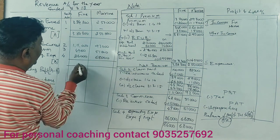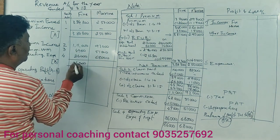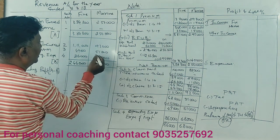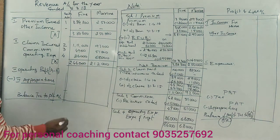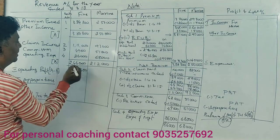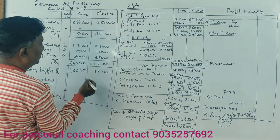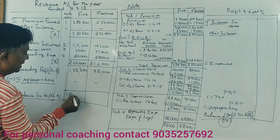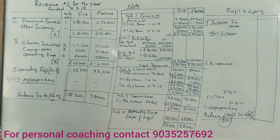Computing totals for the revenue account: after all deductions, the revenue surplus for fire is approximately ₹13,300 and marine carries a balance. Total revenue transfers to profit and loss account. Revenue account is complete for 8 months.